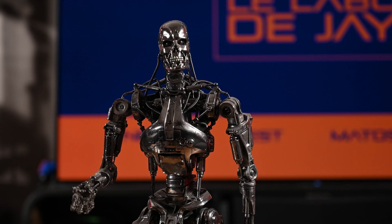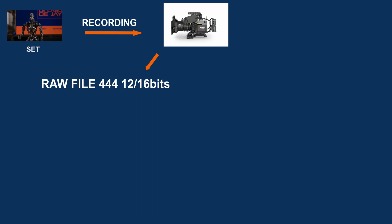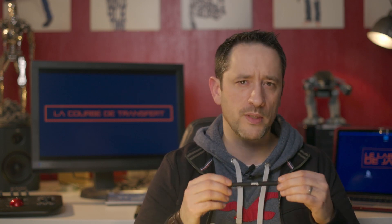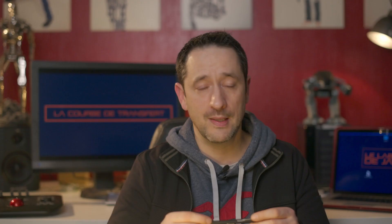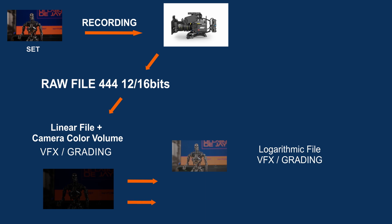There are three ways to process during the shooting of an image. First, you capture a raw image — the equivalent of a negative for a digital camera — from which you can develop whatever you want: change ISO, color temperature, color space, color volume. From this raw picture you can either develop a linear image associated with the camera's color volume for special effects — each camera like Alexa or RED has its own color volume — or a logarithmic file for color correction, or even a Rec.709 image for editing.